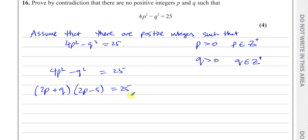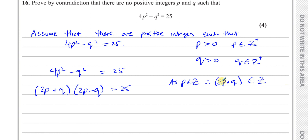Now, because P and Q are integers, 2P minus Q — because P and Q are both integers — we can say that 2P + Q is also an integer, because you're multiplying an integer by 2 and then adding another integer, that's going to be an integer. And similarly, 2P minus Q will also be an element of the integers, because you take P, multiply it by 2 and then take away another integer from that, so you get an integer. So you have an integer times an integer equals 25.